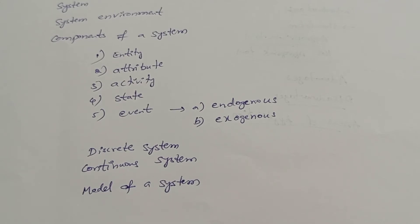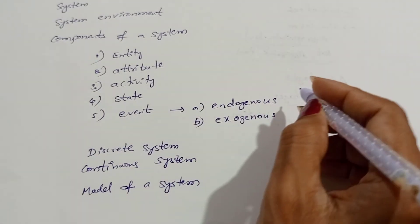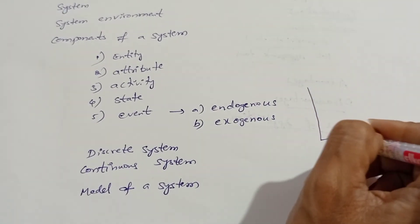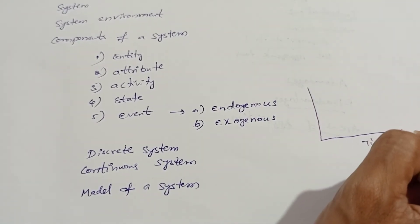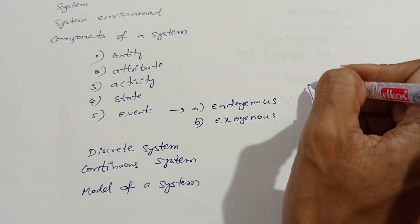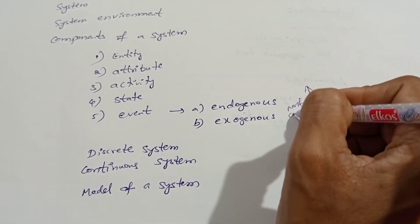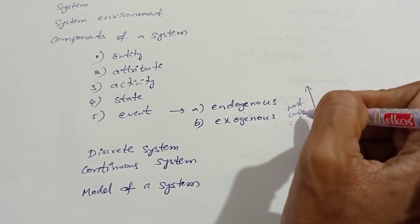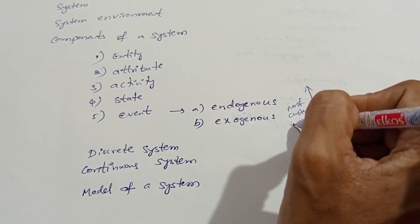It is nothing but a discrete set of points in time. How it represents is, for example, this is time on one axis, and here we consider the number of customers in a bank or in a waiting line.